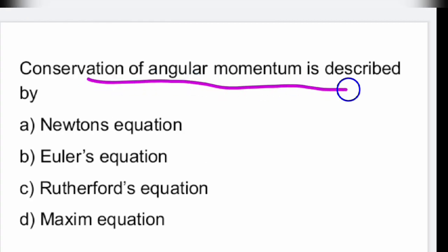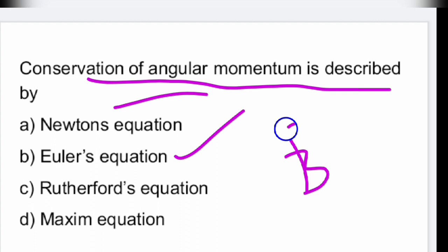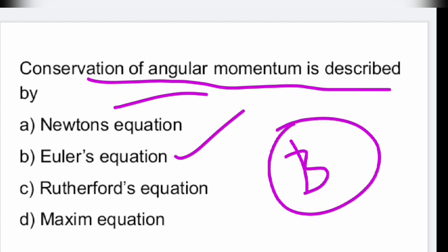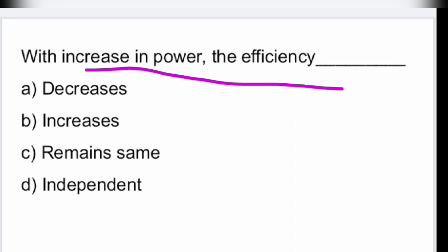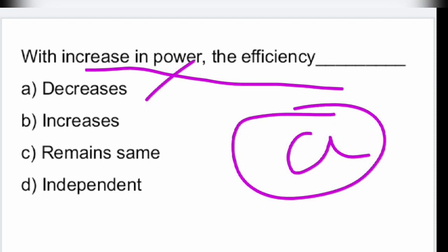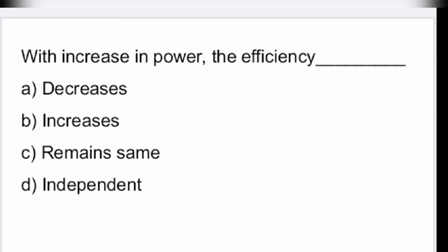Next question: conservation of angular momentum is described by what? Option B — conservation of angular momentum is described by Euler's equation. Next: with the increase in power, the efficiency decreases.